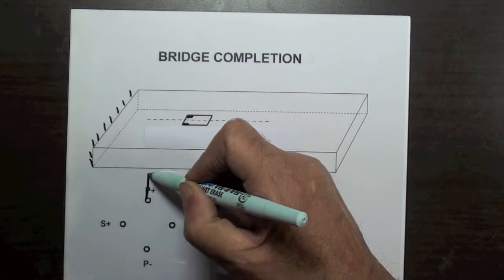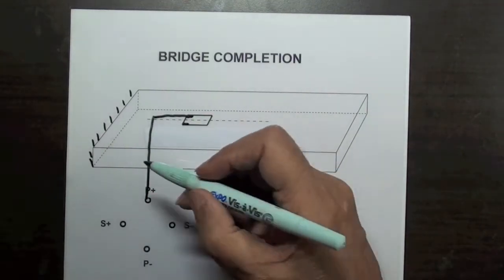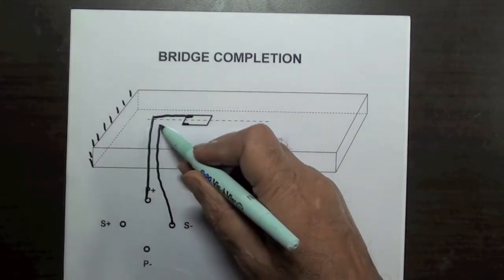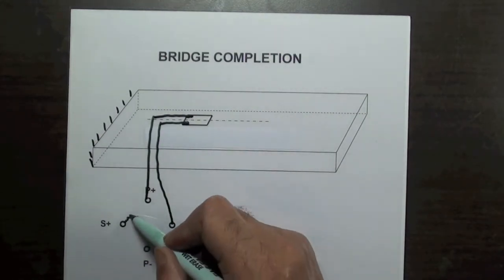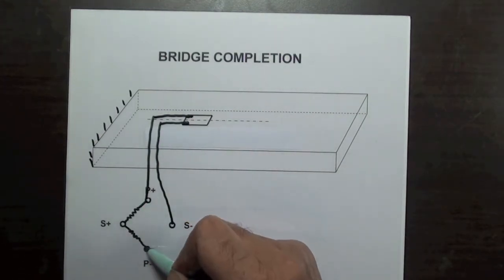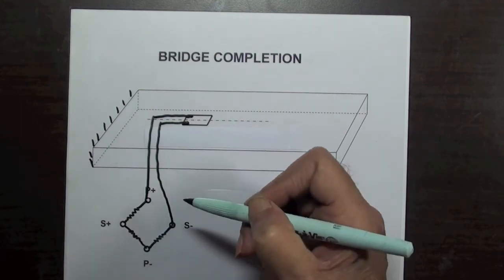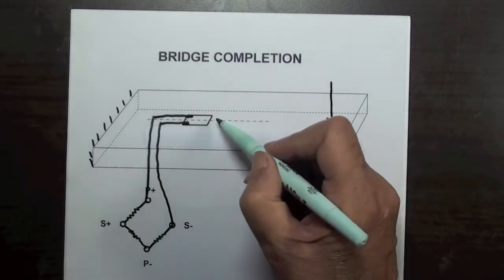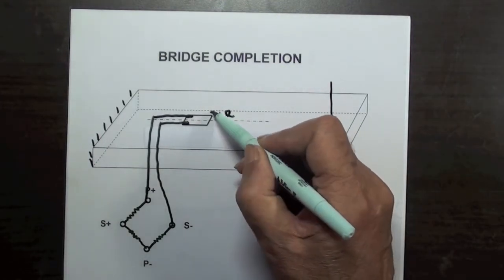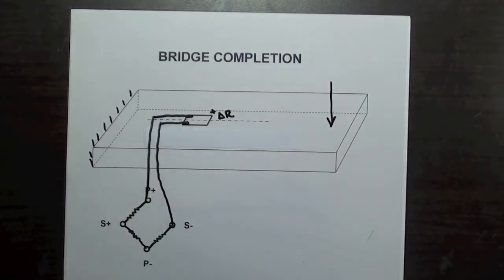For instance, with one arm bonded on the top surface of a cantilever beam, the gauge is connected to one arm of the bridge and the other arms are completed with precision resistors internal to the strain measuring instrument. When the beam is loaded vertically, the strain gauge will be in tension and its resistance will change by plus delta R corresponding to strain.